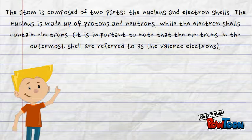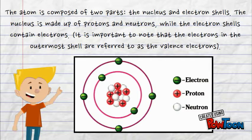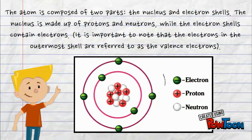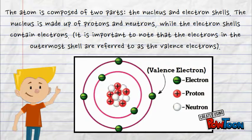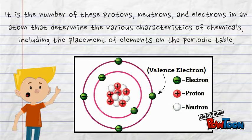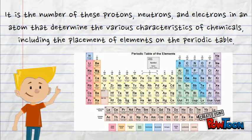The atom is composed of two parts: the nucleus and electron shells. The nucleus is made out of protons and neutrons, while the electron shells contain electrons. It's important to note that the electrons in the outermost shell are referred to as the valence electrons. It is the number of protons, neutrons, and electrons in an atom that determine the various characteristics of chemicals, including the placement of elements on the periodic table.